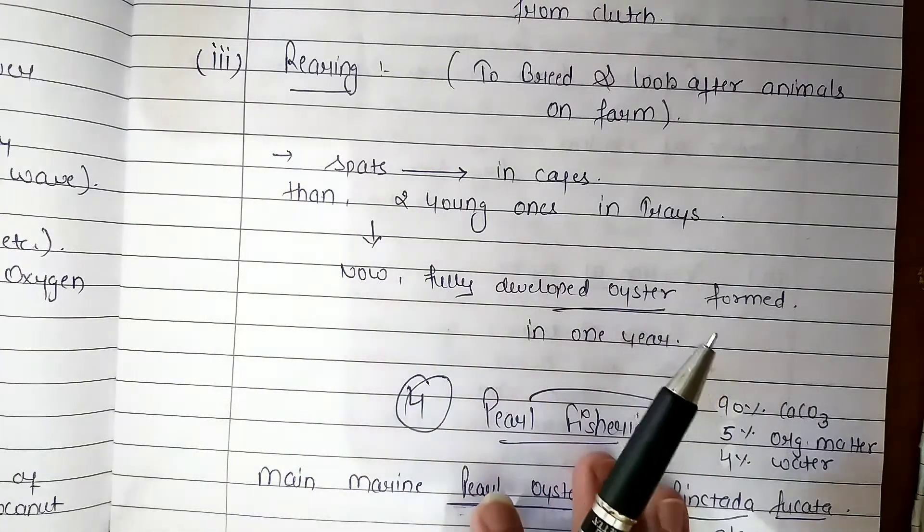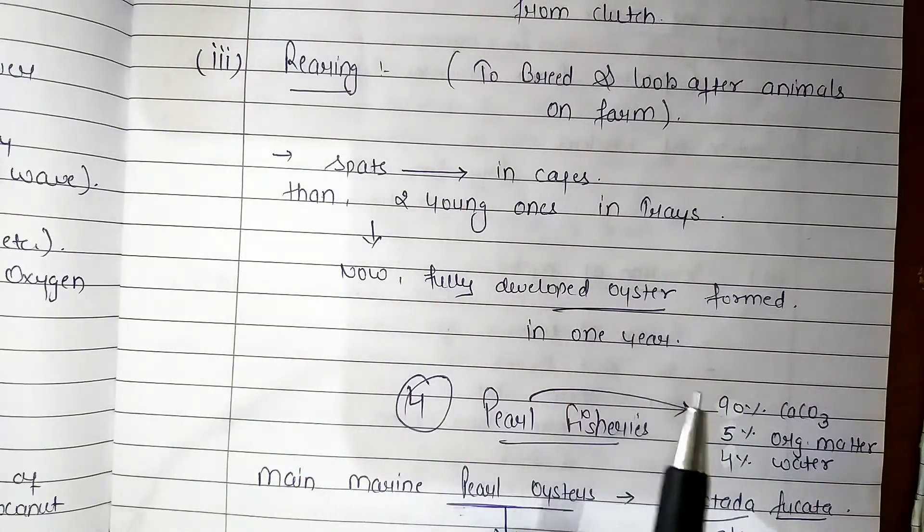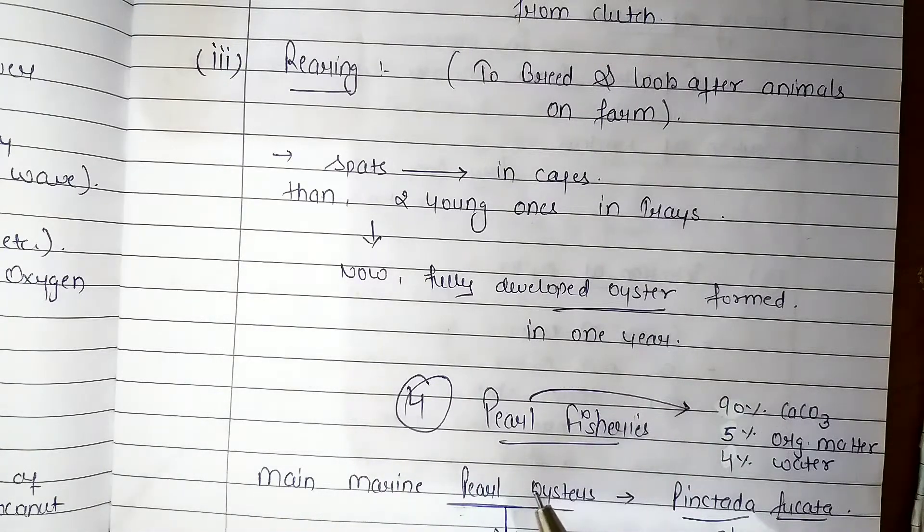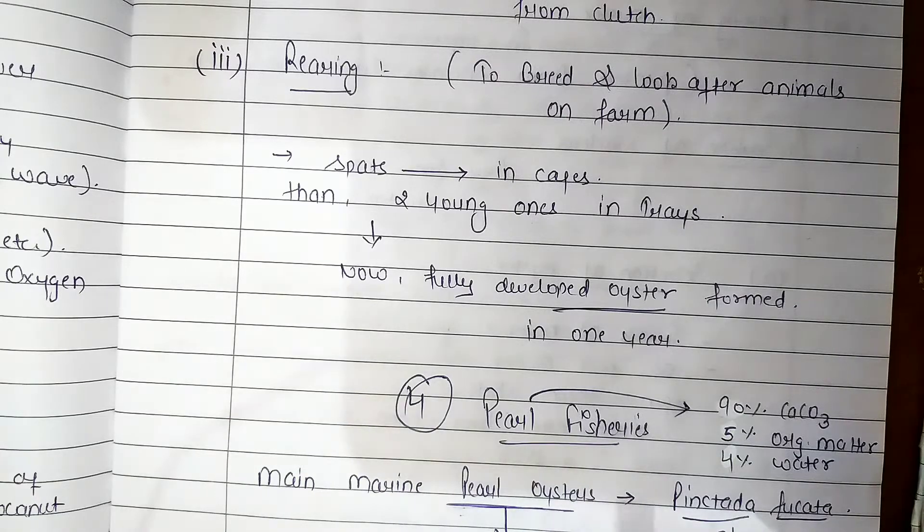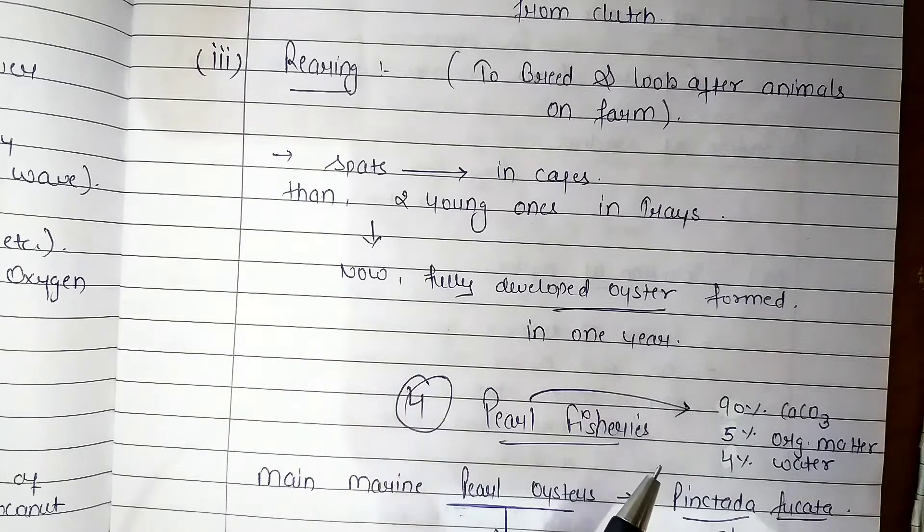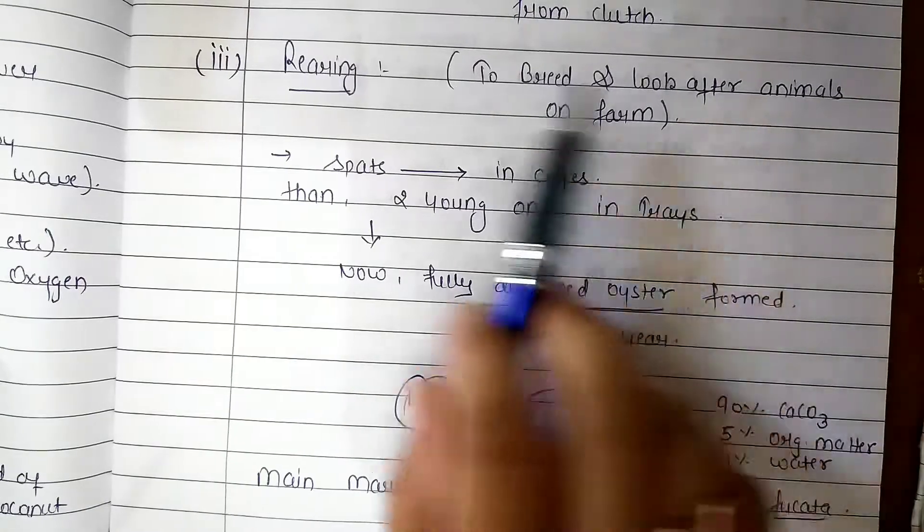We have total edible molluscs in which we do culturing. First we select the site, then seed collection. Seed means the small young ones, fish seed. Then the look after is rearing.